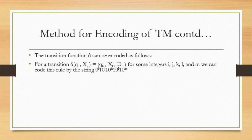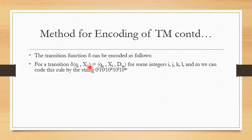For a single transition δ(qi, xj) = (qk, xl, dm), where i, j, k, l, and m are integers obtained using the ordering from the previous slide, we convert it to binary using the rule: 0^i 1 0^j 1 0^k 1 0^l 1 0^m. This means we write as many zeros as the subscript index for each component, and each component is separated by a single one.